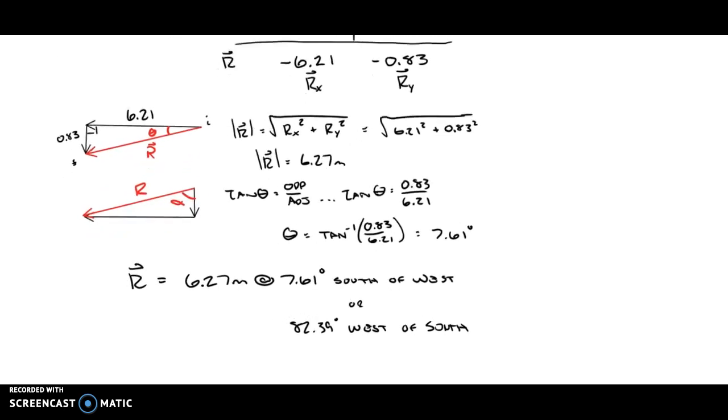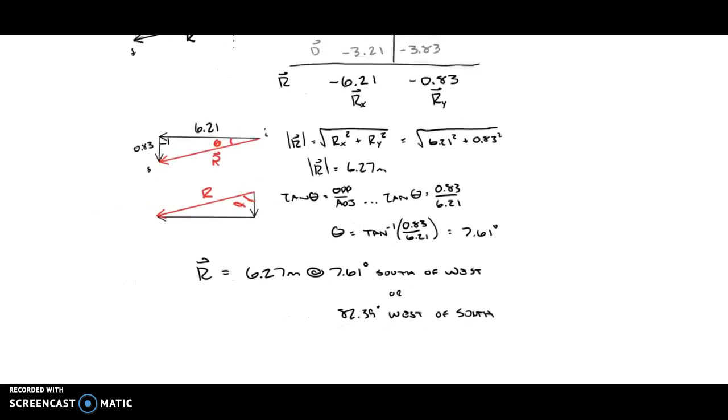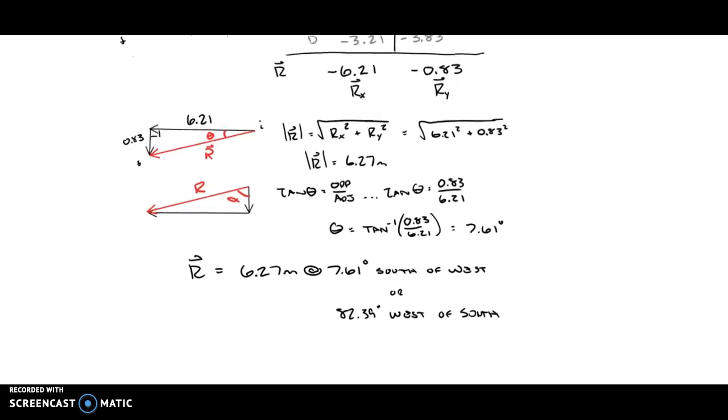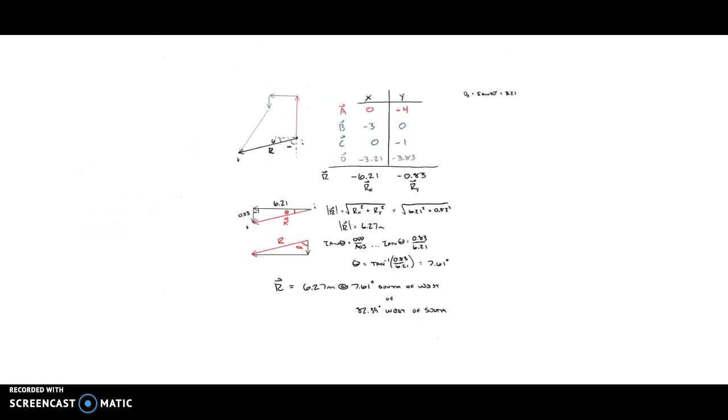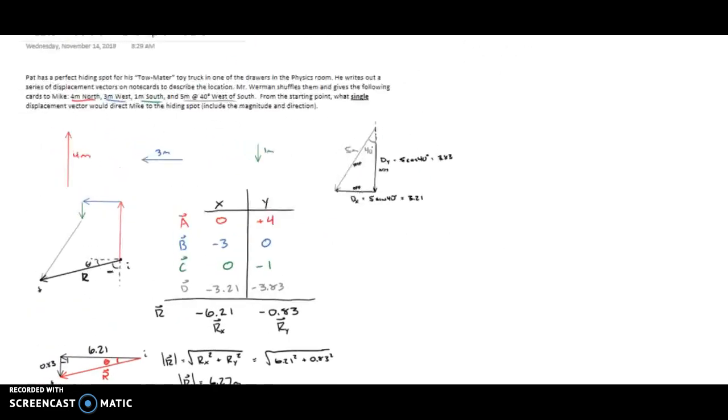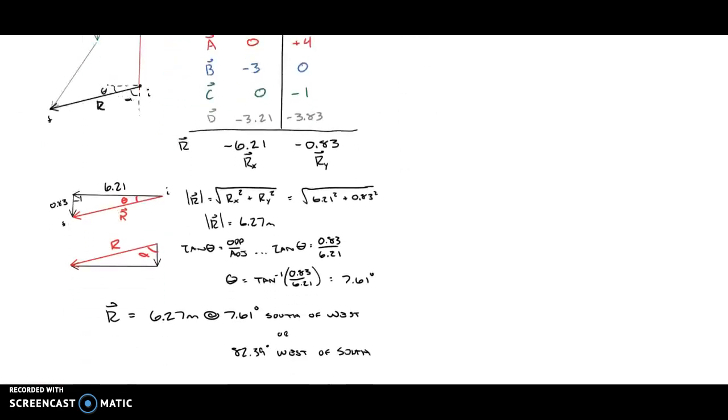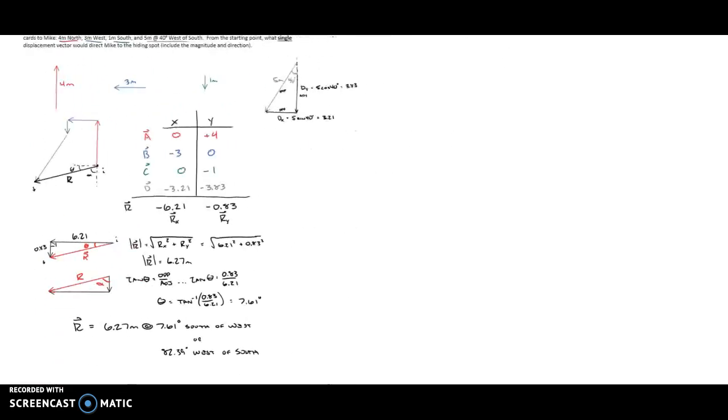So again, if I start at my starting location and turn 7.61 degrees south of west and then walk 6.27 meters, that should take me to the location of our hidden TowMater toy truck. Hope this makes sense. I'll zoom out and let you see the work. This is a process we're going to follow for any vector addition problem. And this is a good common one with one of them at an angle that you have to break into the x and y pieces. Hope this is helpful. Take care.